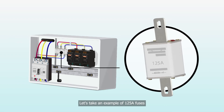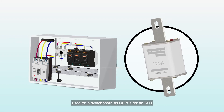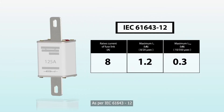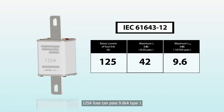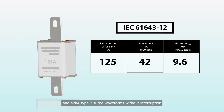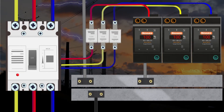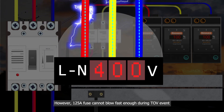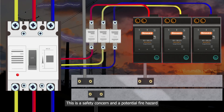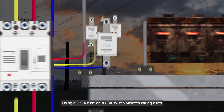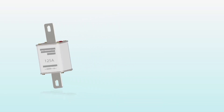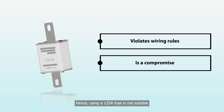Let's take an example of 125A fuses used on a switchboard as OCPDs for an SPD. As per IEC 61643-12, a 125A fuse can pass 9.6kA Type 1 and 42kA Type 2 surge waveforms without interruption. However, a 125A fuse cannot blow fast enough during a TOV event — this is a safety concern and a potential fire hazard. Using a 125A fuse on a 63A switchboard also violates wiring rules. Hence, using a 125A fuse is not suitable.